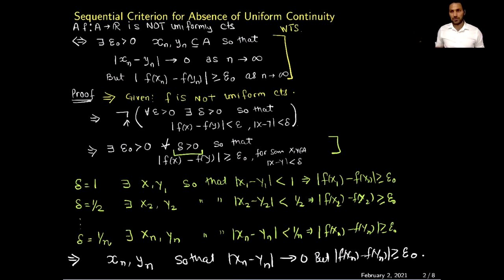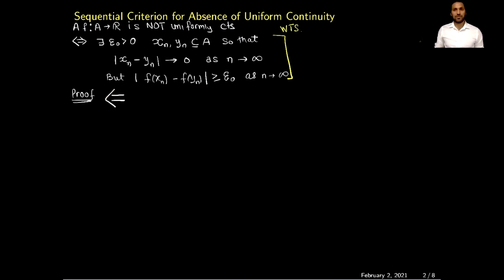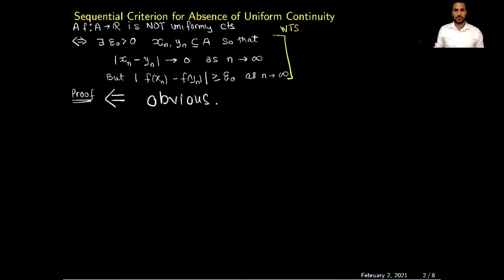This proves the forward direction of this theorem. The proof of the backward direction is straightforward, so I will leave it as an exercise. You should be able to fill in the details — if this statement is true, why the function cannot be uniformly continuous. Basically, if you just use the definition of uniform continuity you should be able to prove it.